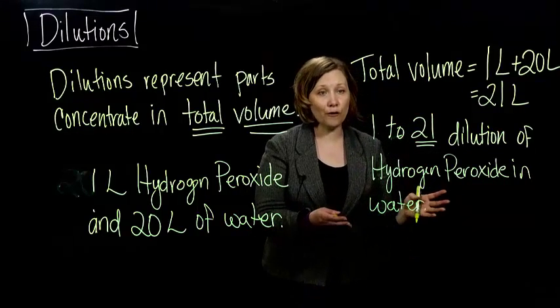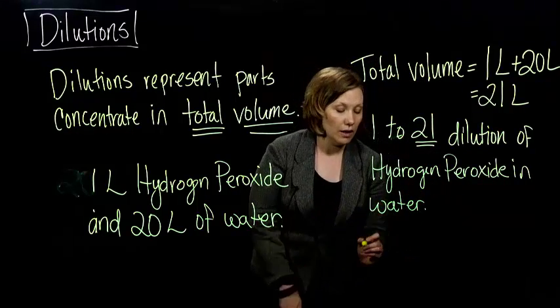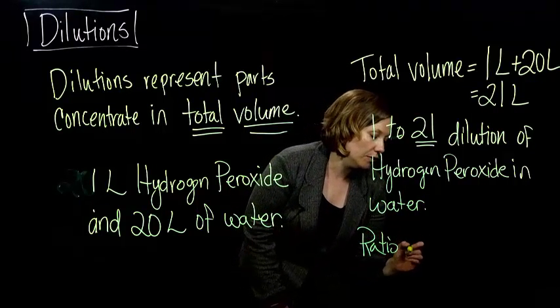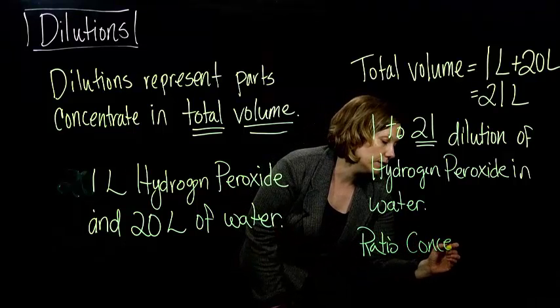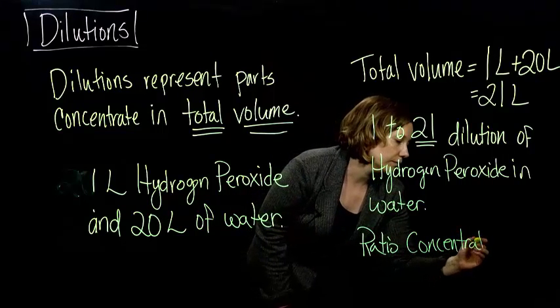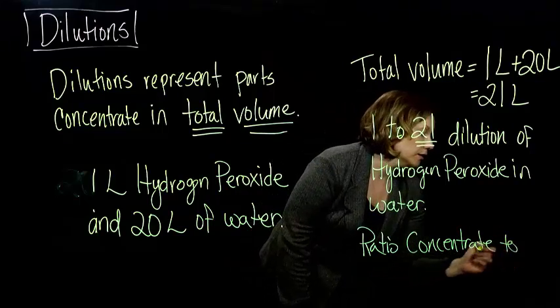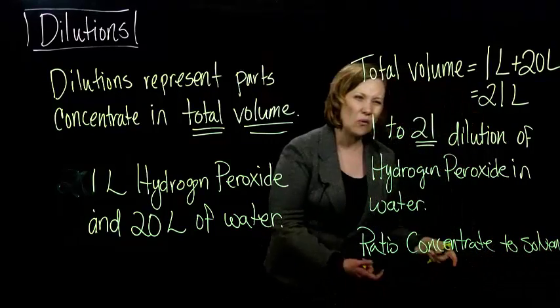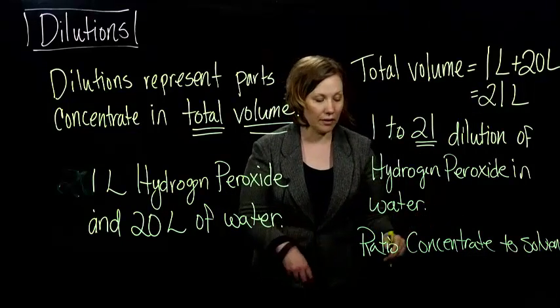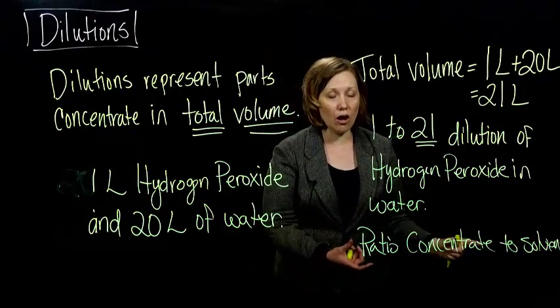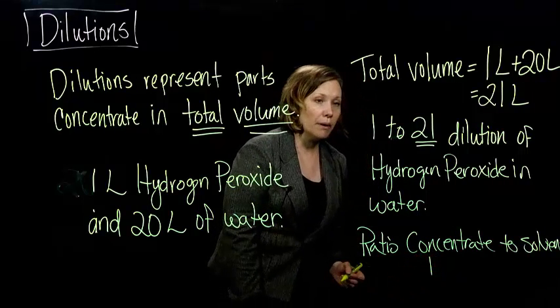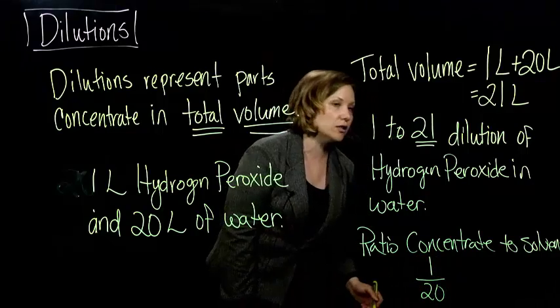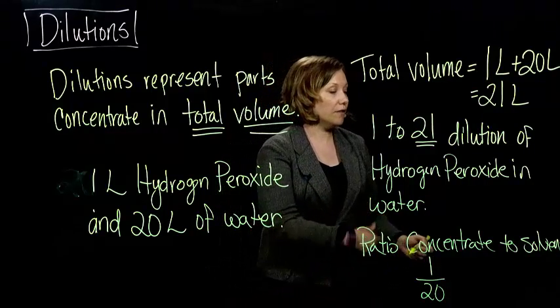So which is different, then if we took the ratio—if we wanted the ratio of the concentrate to the solvent, which in this case the solvent is water. The solvent is just whatever you're mixing it with. So if we wanted the ratio of the concentrate to the solvent, we would have one part hydrogen peroxide and 20 parts water, which is different than my dilution, which is one to 21.